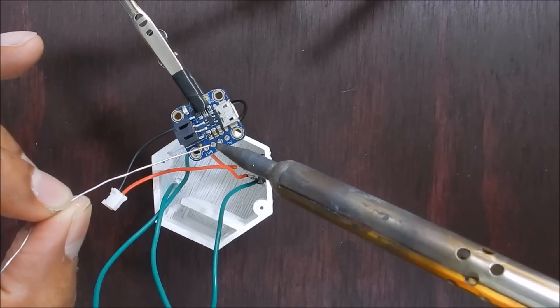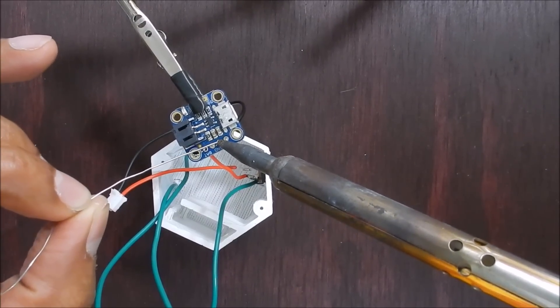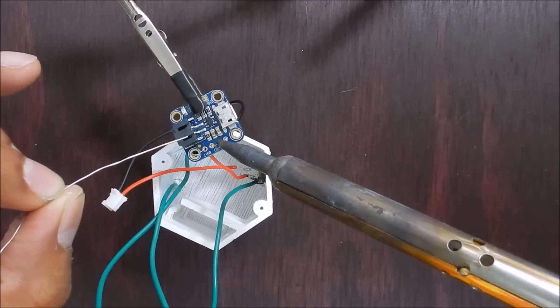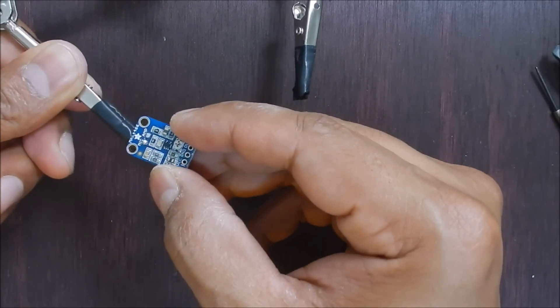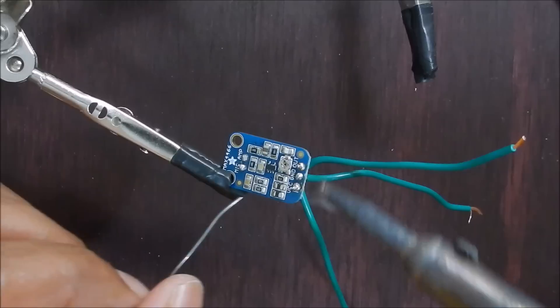Solder wires to the LiPo charger according to the circuit diagram. Prepare the mic by soldering wires to it and then solder all the wires to the Arduino Gemma according to the circuit diagram.